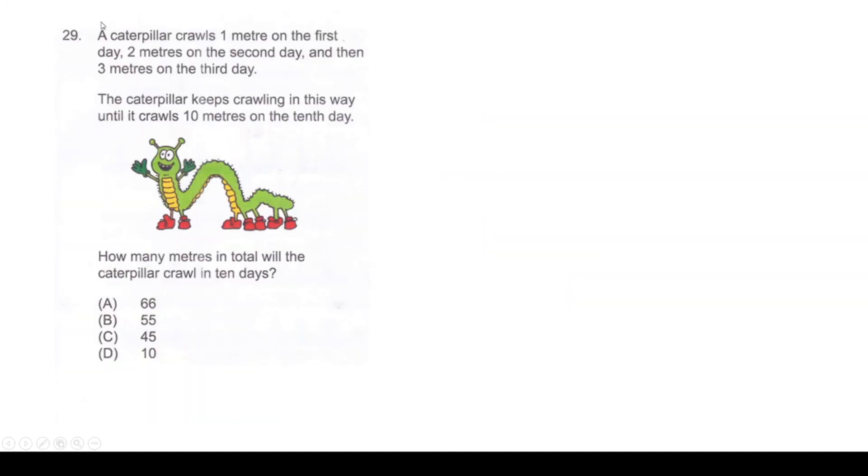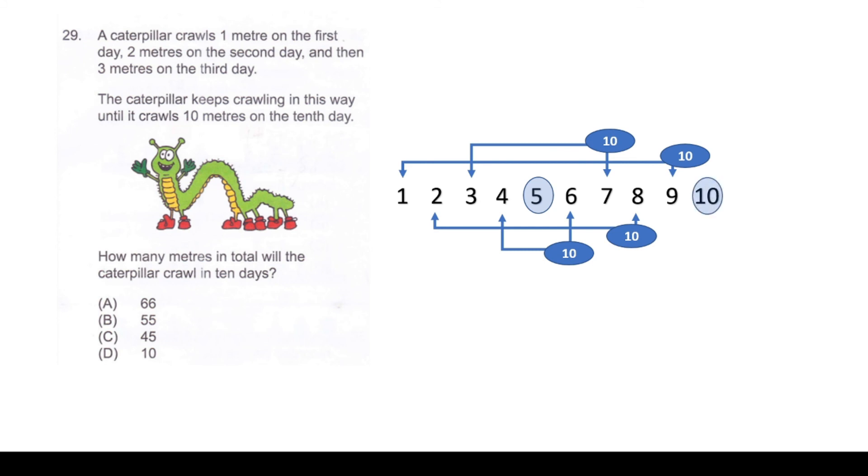A caterpillar crawls 1 meter on the first day, 2 meters on the second day, then 3 meters on the third day. The caterpillar keeps crawling in this way until it crawls 10 meters on the 10th day. How many meters in total will the caterpillar crawl in 10 days? Use your number bonds. 1 and 9 make 10, 2 and 8 make 10, 3 and 7 make 10, and 4 and 6 make 10. Here we make 40 meters. Then there's this 5, which makes it 45, and the remaining 10 makes 55. Your answer is 55 meters, which is option B. This is quick mental calculation.